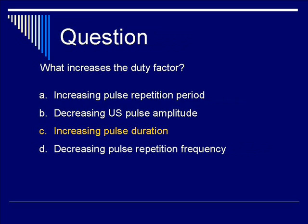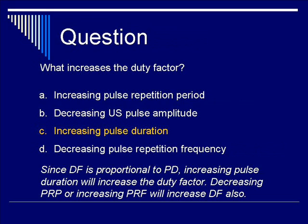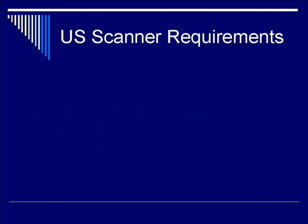The correct response is C — increasing pulse duration. Notice that duty factor DF = PD / PRP, so by increasing PD, the duty factor increases. Increasing ultrasound pulse amplitude does not affect duty factor, and changing PRP or PRF in those directions would not increase it.